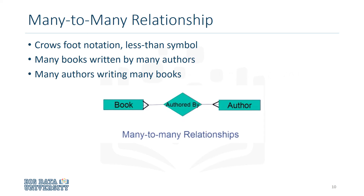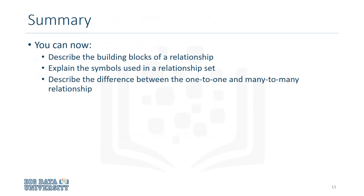To represent many authors writing many books, use the greater than and less than symbols on either side of the relationship set. This is called a many-to-many relationship, where each entity in the entity set is participating in more than one relationship — many books being written by many authors, or many authors writing many books. You can now describe the building blocks of a relationship, explain the symbols used in a relationship set, and describe the difference between the one-to-one and many-to-many relationship.